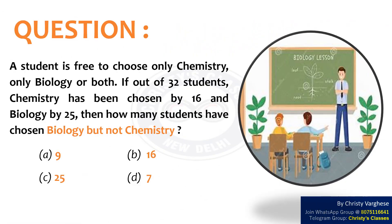Question. A student is free to choose only chemistry, only biology, or both. If out of 32 students, chemistry has been chosen by 16 and biology by 25, then how many students have chosen biology but not chemistry?